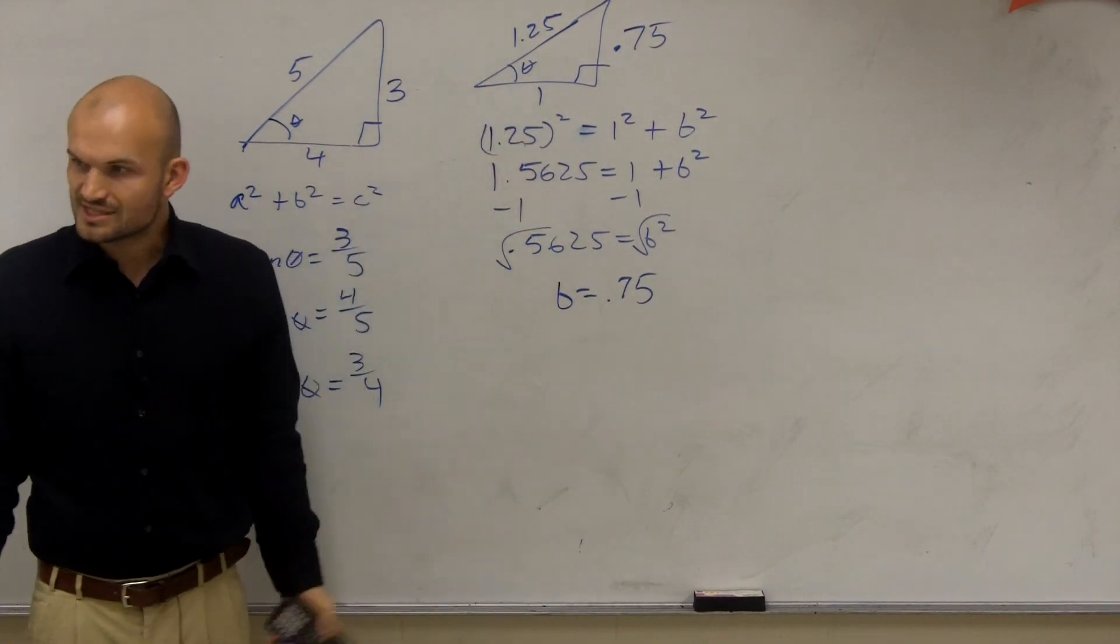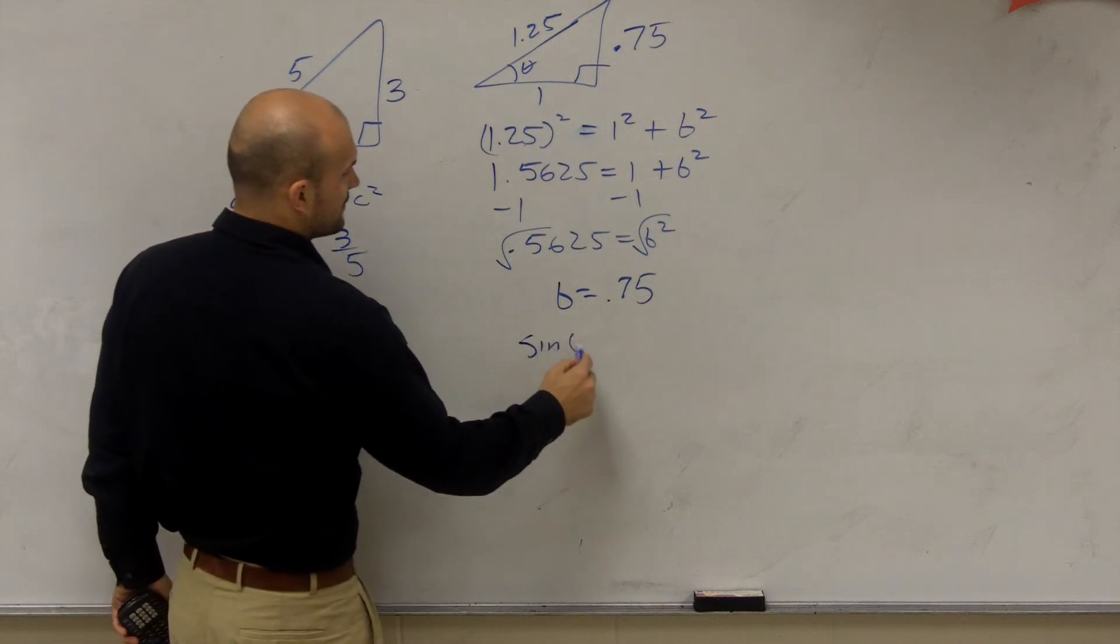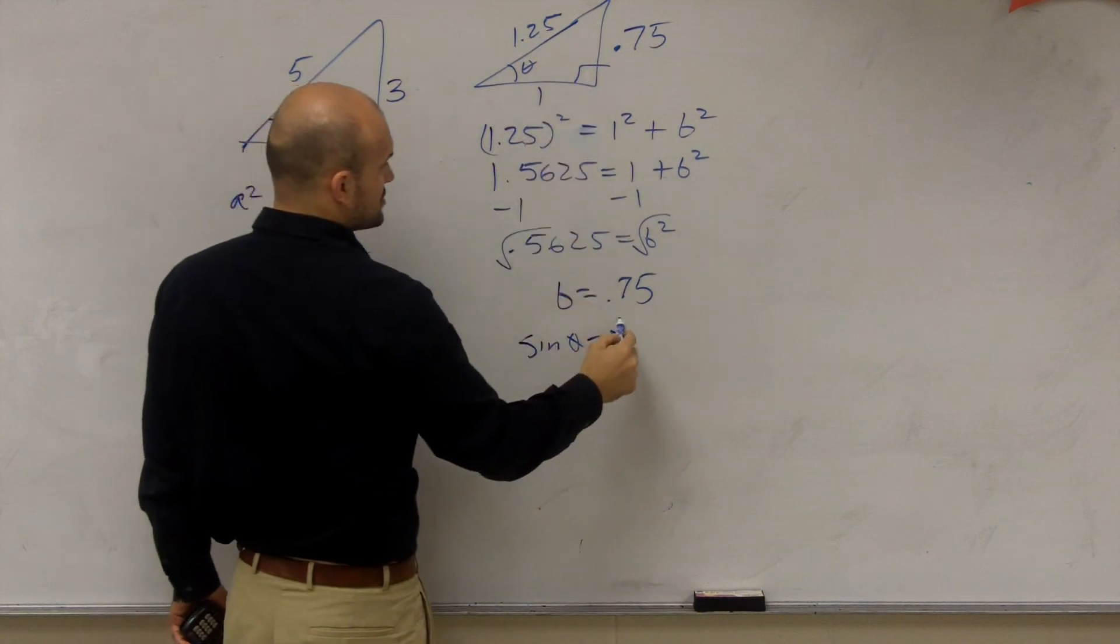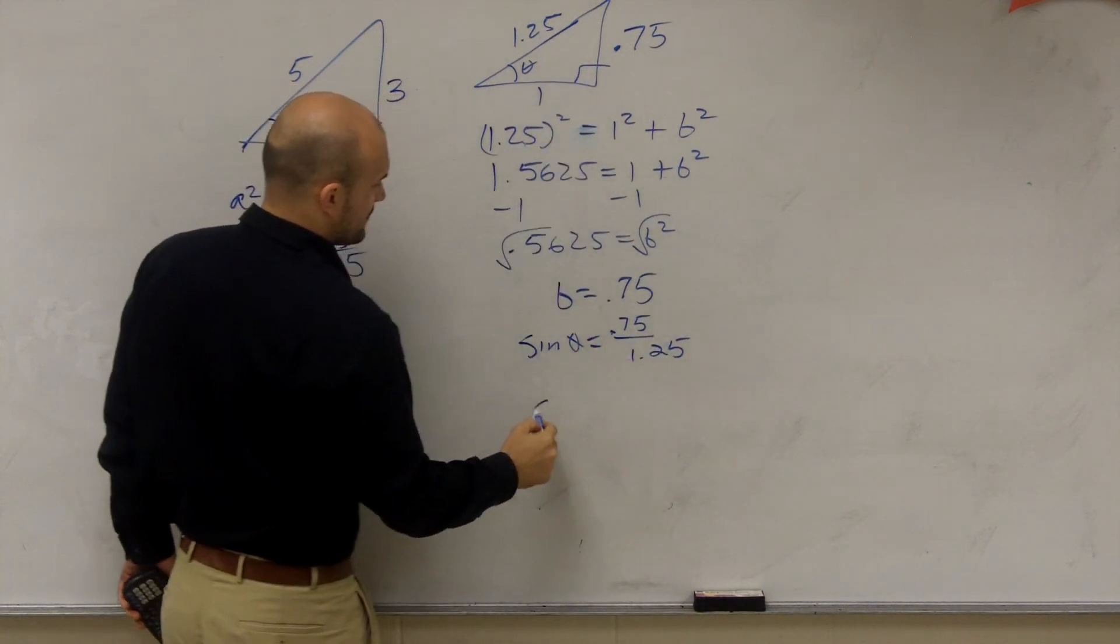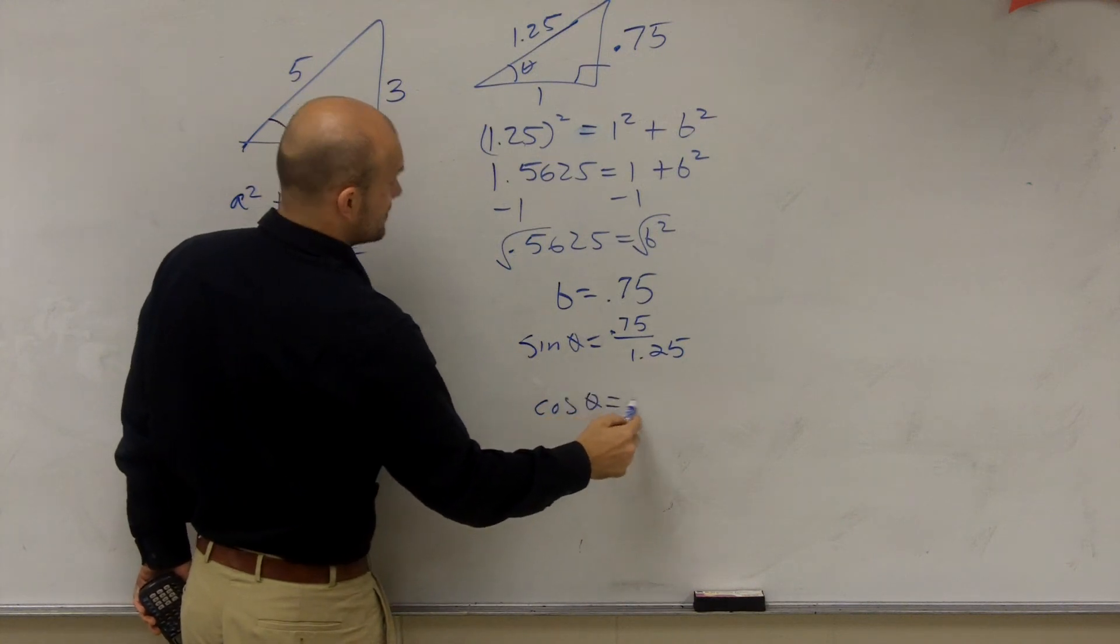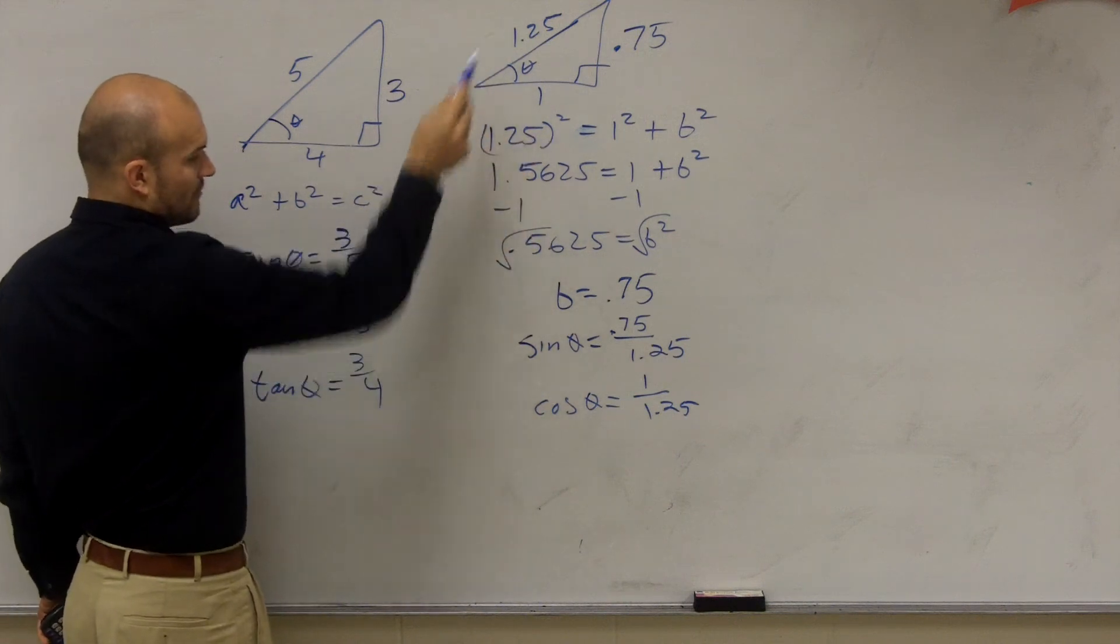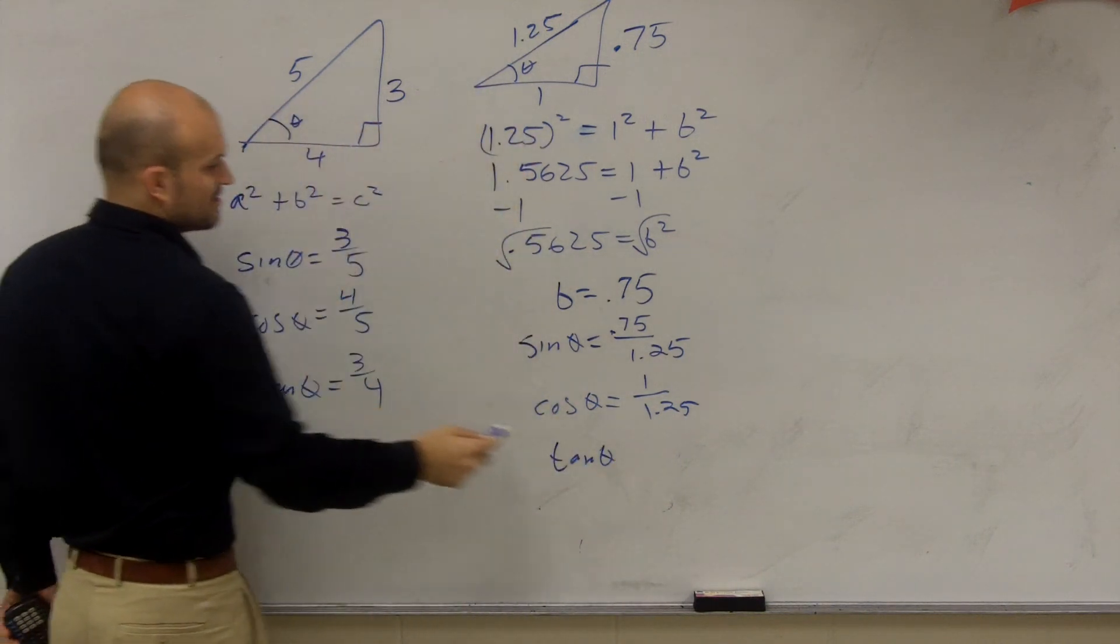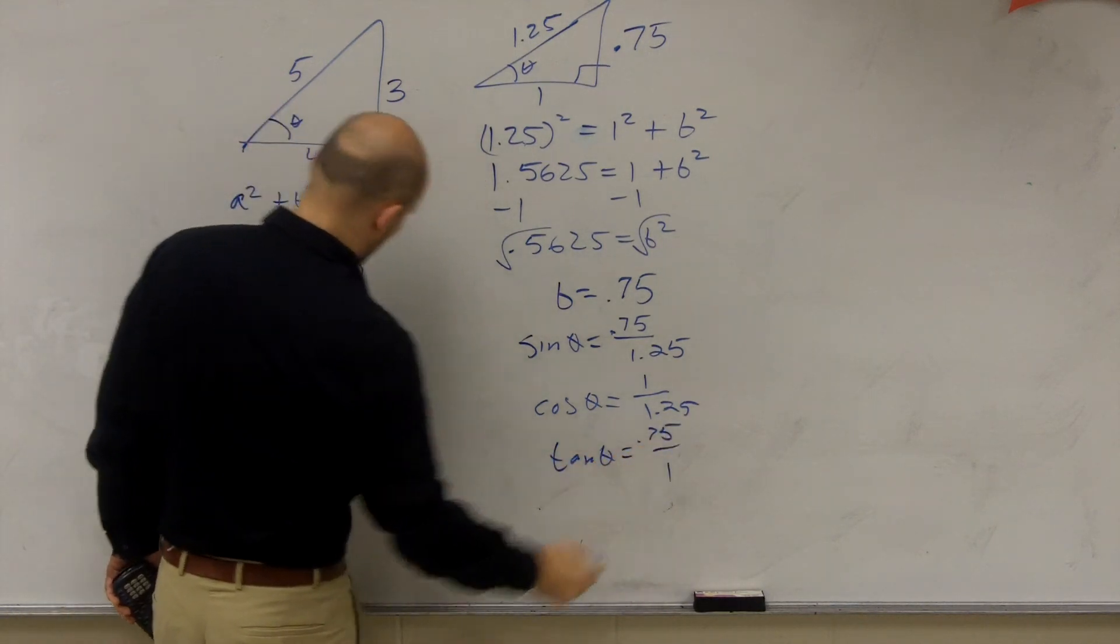Now, let's take a look at this triangle and see if that's going to be the exact same. So the sine of theta in this triangle is going to be opposite over hypotenuse, which is 0.75 divided by 1.25. Cosine of theta is going to be 1 over 1.25, adjacent over hypotenuse. And then the tangent of theta in this one is going to be 0.75 divided by 1.